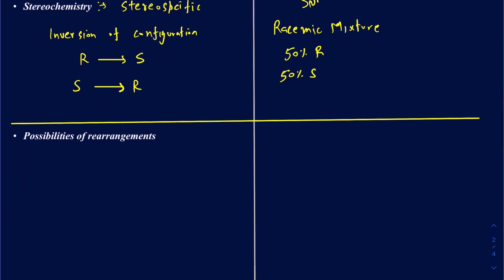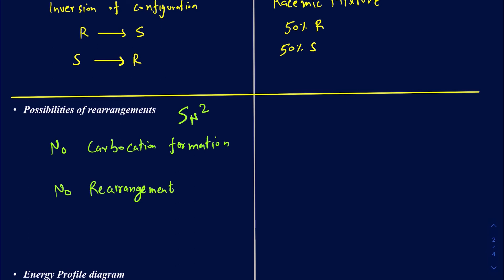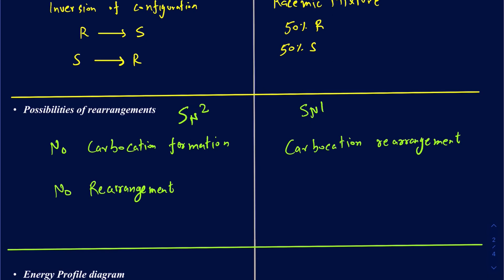Regarding rearrangements: there is no carbocation formation in SN2, so there are no carbocation rearrangements. For SN1, since you do form a carbocation, you can see possibilities of carbocation rearrangements. Whenever you do an SN1 reaction, check whether the carbocation formed is the most stable possible. If a methyl shift, hydride shift, ring opening, or ring contraction can give a more stable carbocation, you should do so.